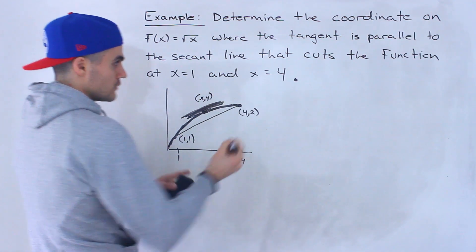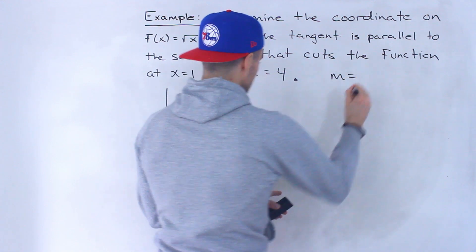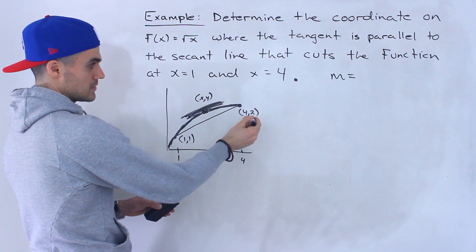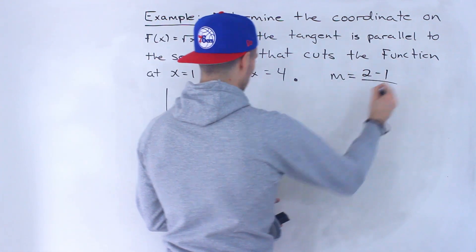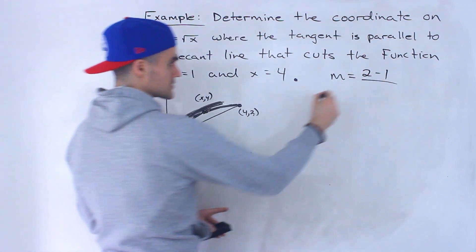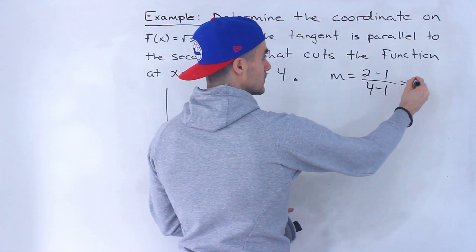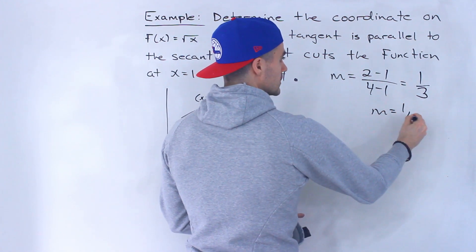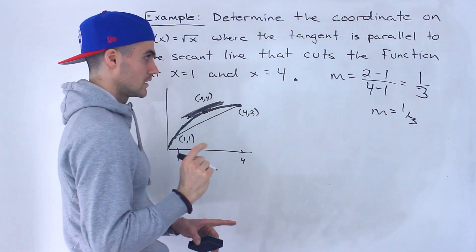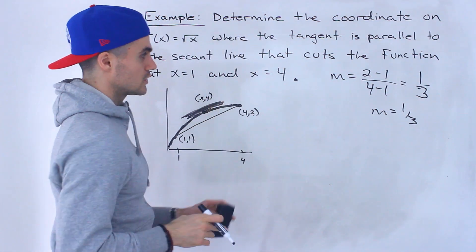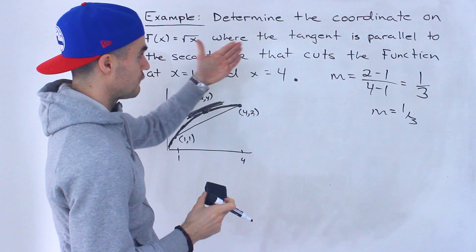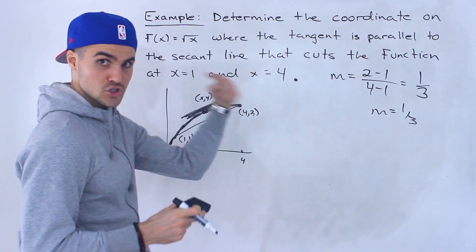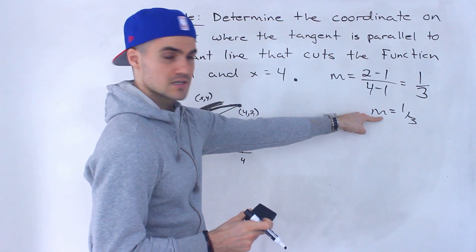So the first thing is to find the slope of this secant line. The slope is (y₂ - y₁) / (x₂ - x₁), which is (2 - 1) / (4 - 1), giving us 1/3. Another way this question could have been worded: find the coordinate on √x where the slope of the tangent is 1/3.